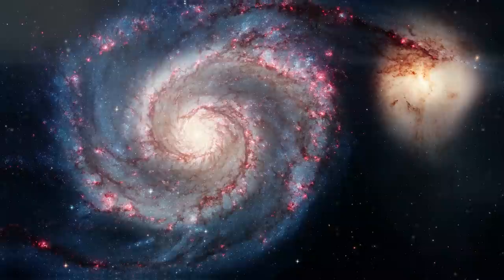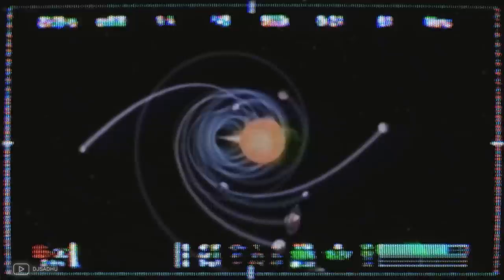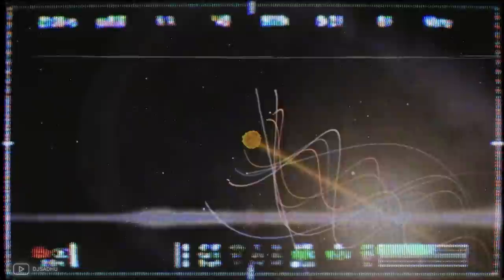However, with a broader consideration of things, we can see a completely different picture. The solar system is constantly moving in a spiral through the expanse of our galaxy.